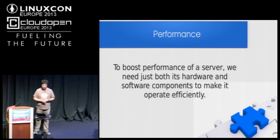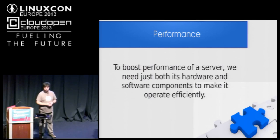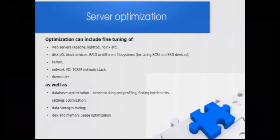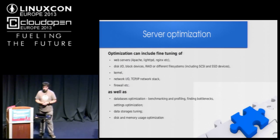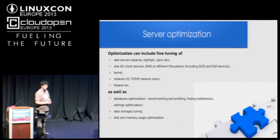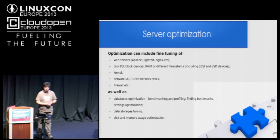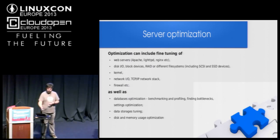What is performance? To boost performance of a server, we need to look at both its hardware and software components to make it operate efficiently. When we talk about server optimization, we talk about fine-tuning of web servers — Apache, Nginx, lighttpd — disk optimization, block devices, RAID, different file systems including SCSI and SSD devices. We can optimize our kernel, optimize the TCP/IP network stack, optimize firewall rules.